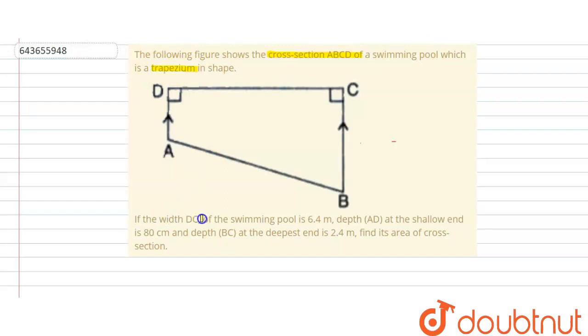If the width DC of the swimming pool is 6.4 meters, so given data, write it over here. This is 6.4 meter, and then we convert it into centimeter, so this is 640 centimeter. And then AD is also given. AD here is 80 centimeter, this is already in centimeter. BC is given 2.4 meter, converted into centimeter, so this is 240 centimeter.